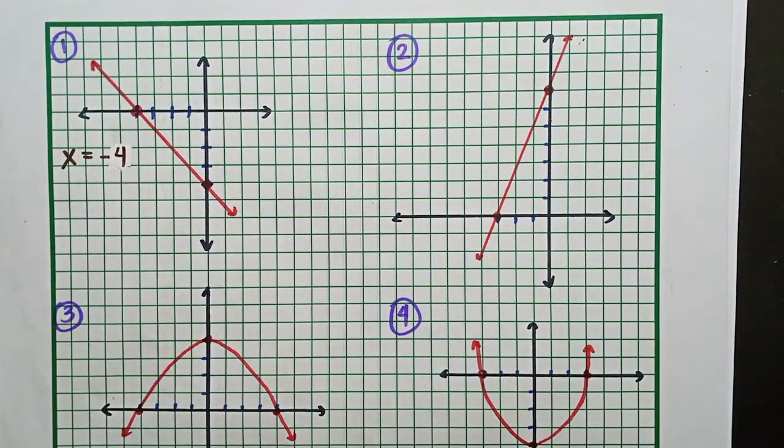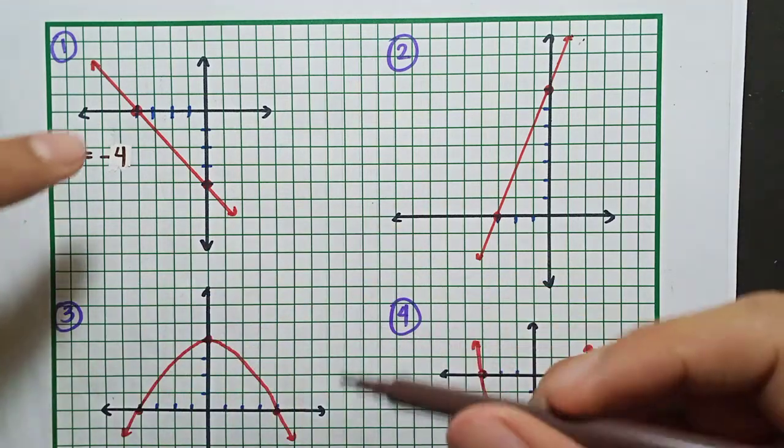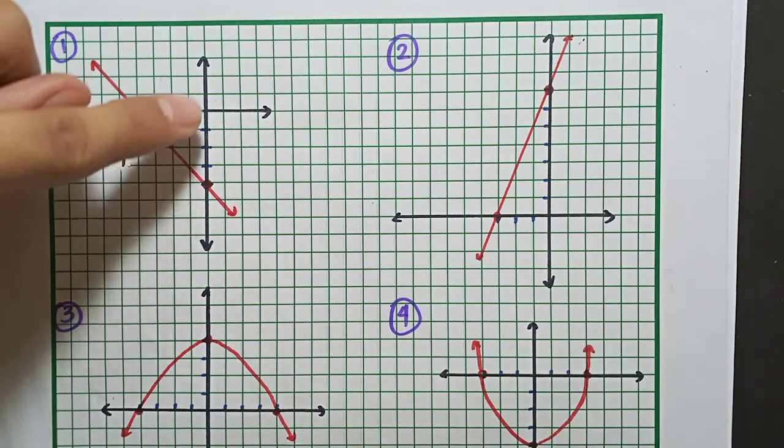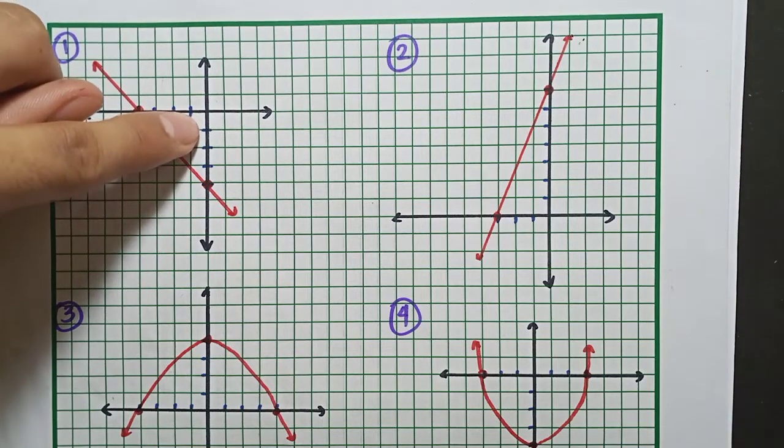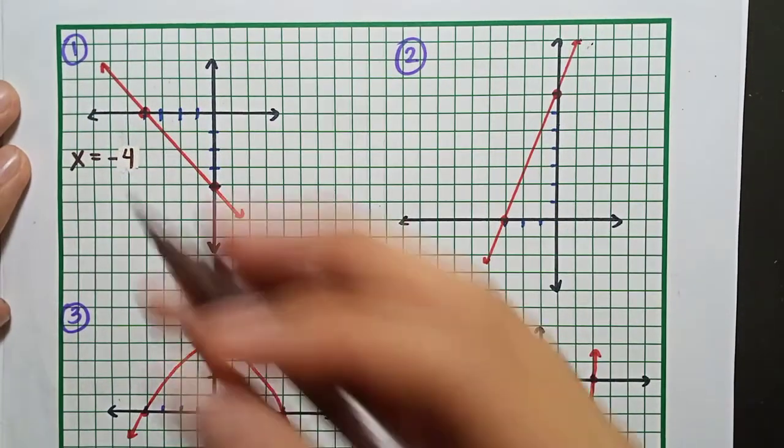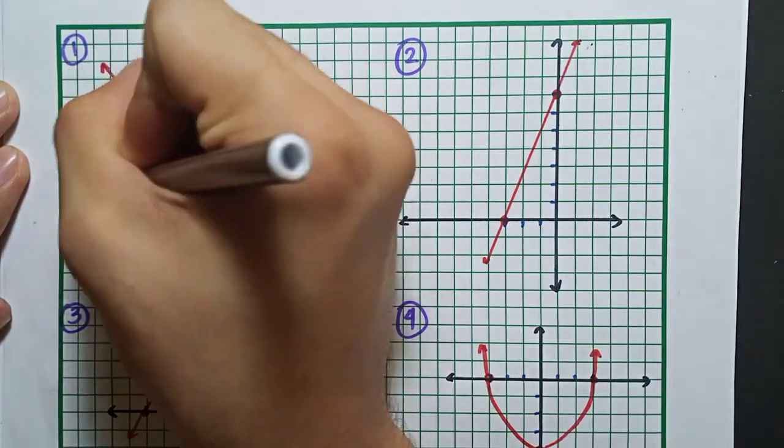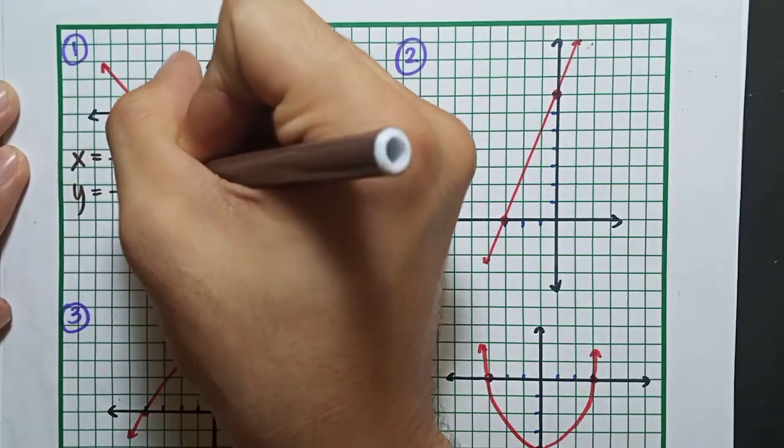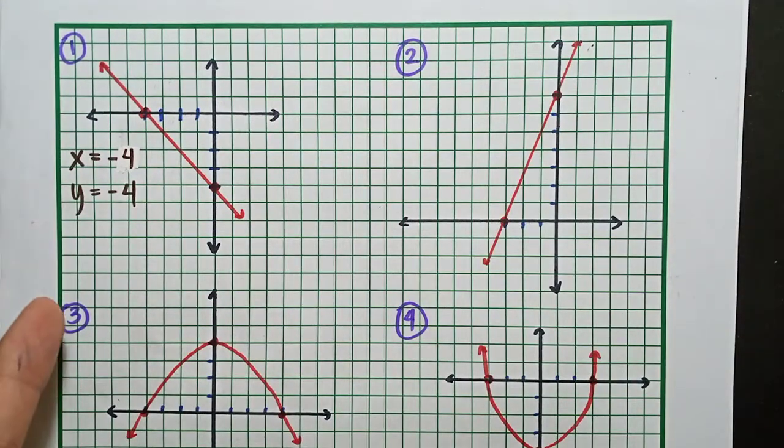Then for the y-axis, the y-intercept is where the point lies on the y-axis. Where does it lie? Negative 1, negative 2, negative 3, negative 4. So y equals negative 4 is our y-intercept. That's all.